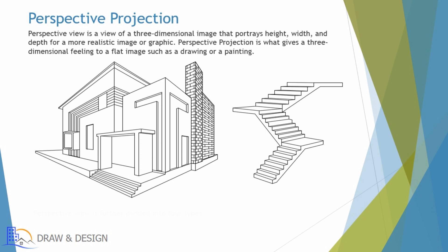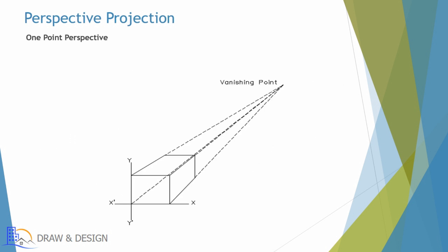Perspective view is further divided into four types. One point perspective: a drawing method that shows how things appear to get smaller as they get further away, converging towards a single vanishing point on the horizon line.